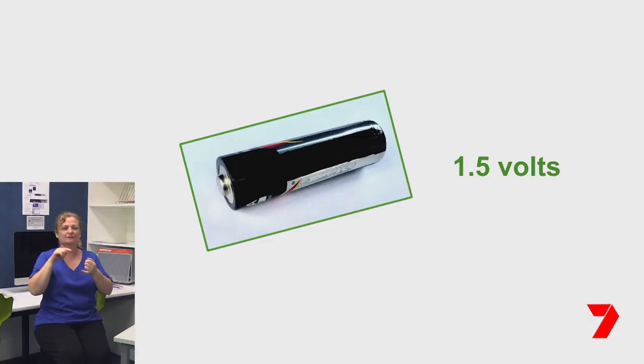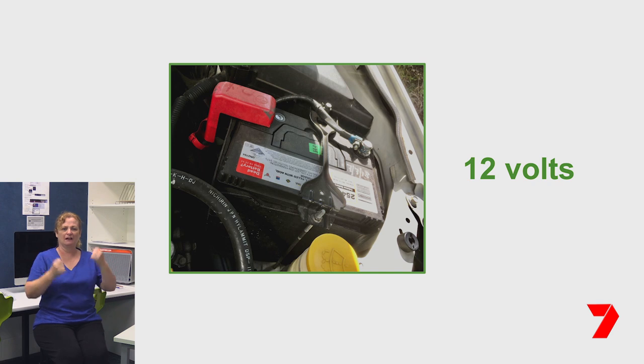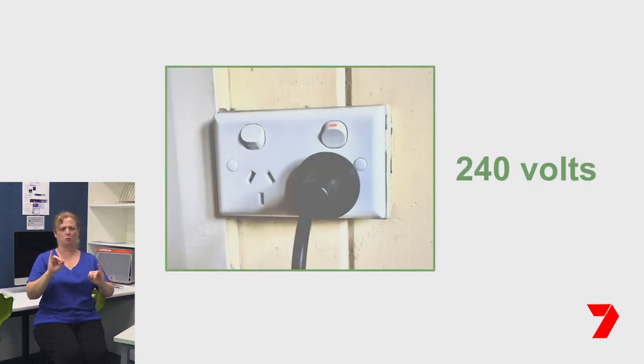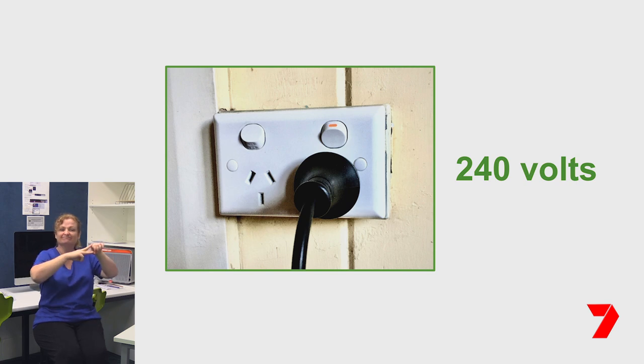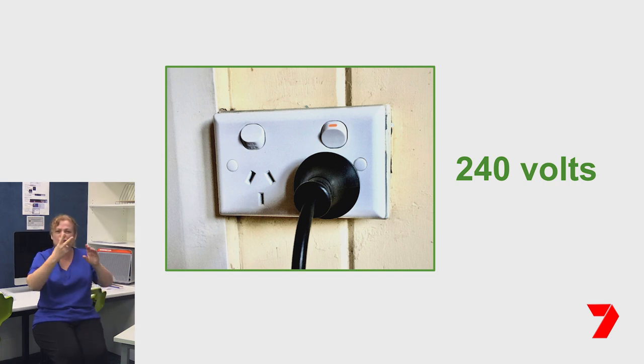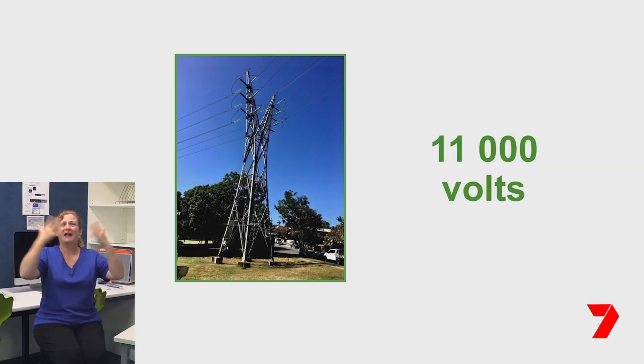Before we start handling too many electrical things, we better take a minute to talk about safety. A tiny bit of electricity is quite safe, but too much can be very dangerous. We measure the strength of electricity in volts. This little battery is only 1.5 volts — quite safe to handle. A car battery is 12 volts and touching that can give you a painful shock. The electricity from a power point is 240 volts, which is very dangerous, so we should never touch the inside of a 240 volt device. The big power cables that carry electricity from town to town are 11,000 volts, which is why they're up on such high towers to keep us safe.